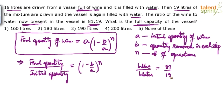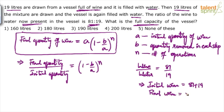Initially, those 19 parts were also wine. After two operations, we replaced that 19 parts of wine with 19 parts of water. So we can say the initial quantity of wine was 81 plus 19, total 100 parts, and the final wine is only 81 parts. This is in terms of number of parts in ratios, not liters.